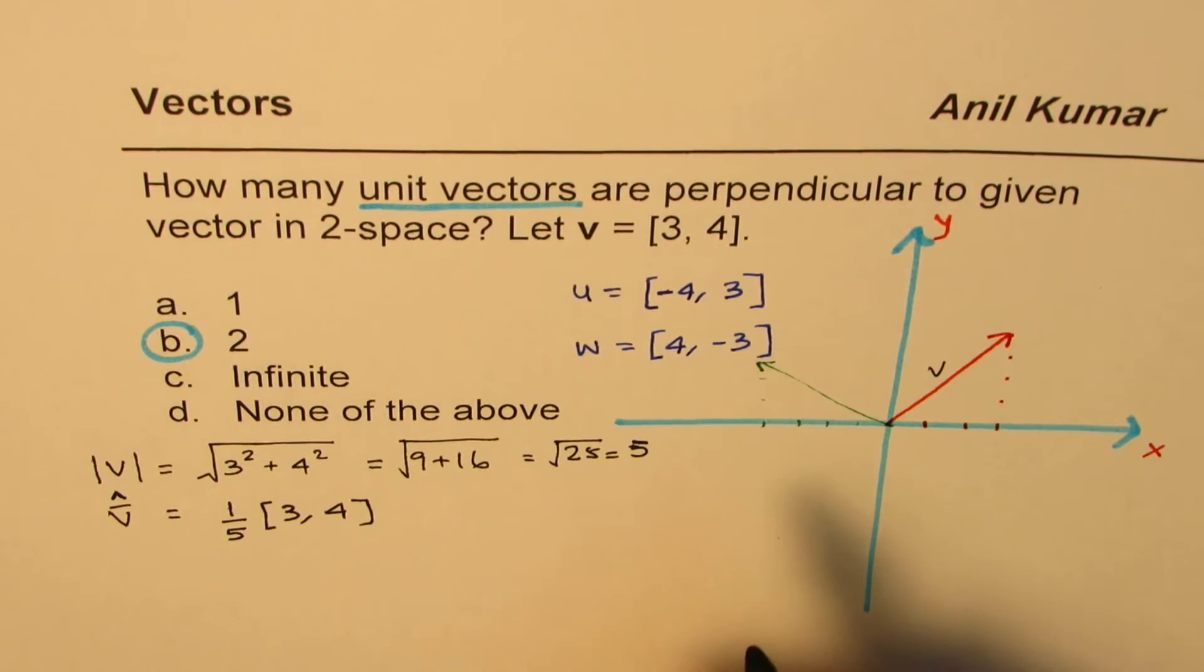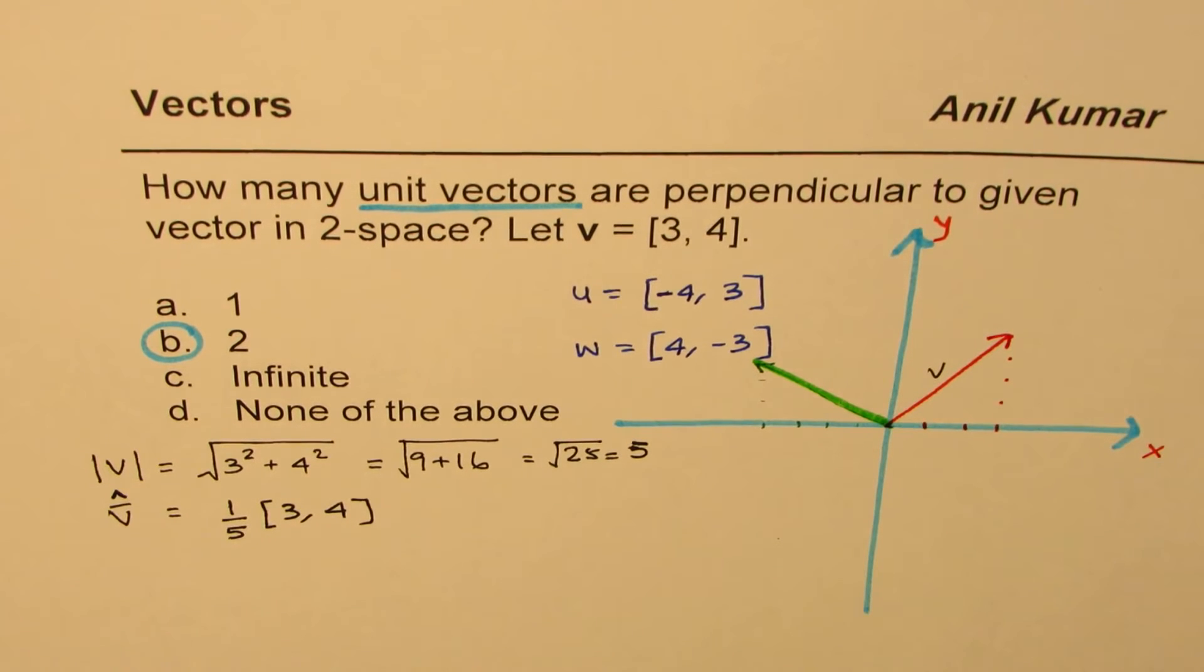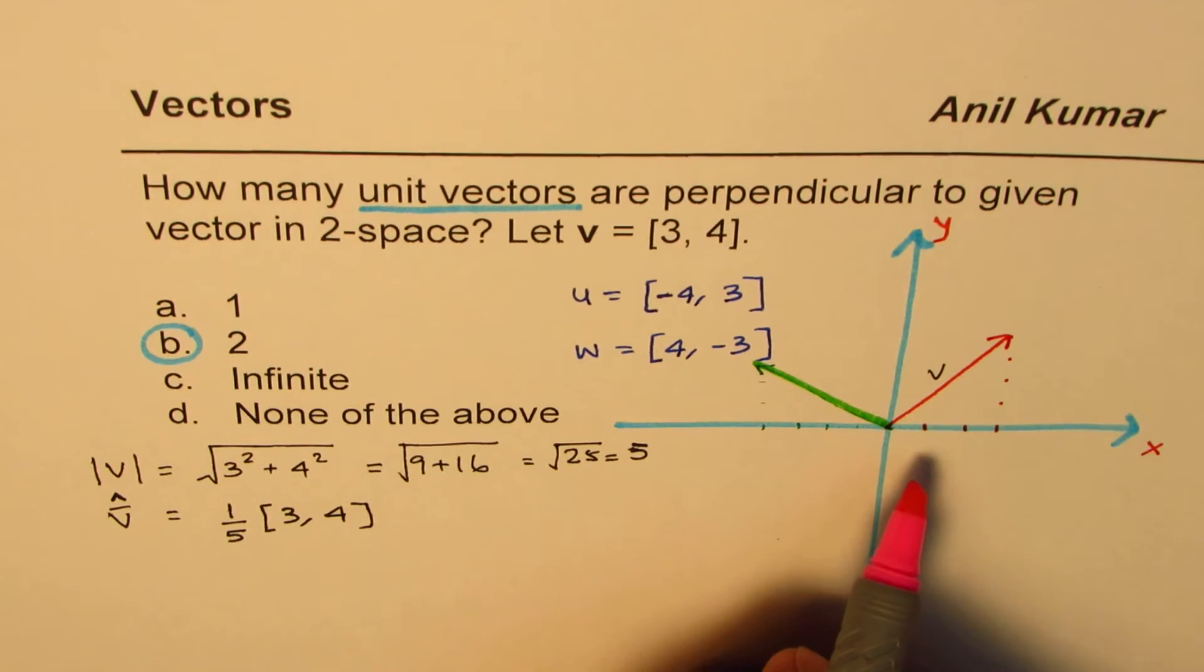Let me use a highlighter. So this vector is [-4, 3] and this vector is perpendicular to the given vector. However, it is not a unit vector.